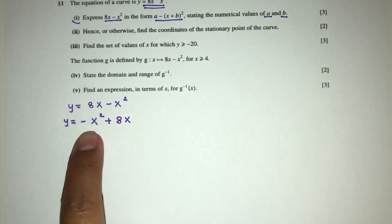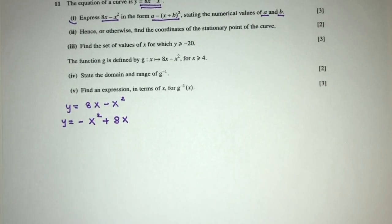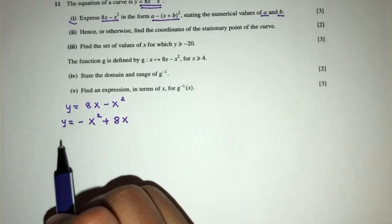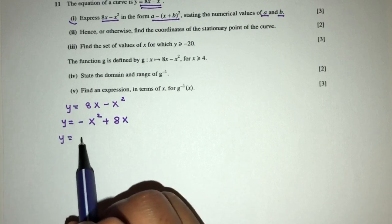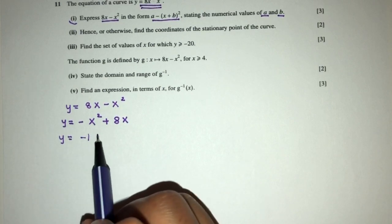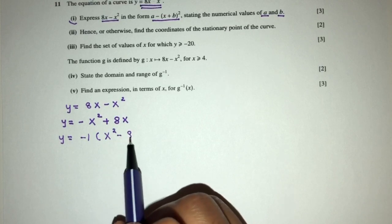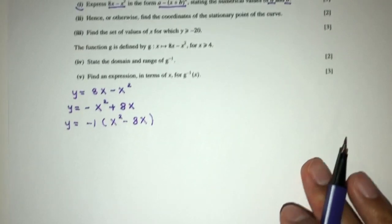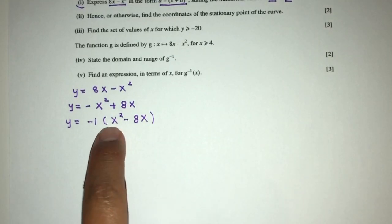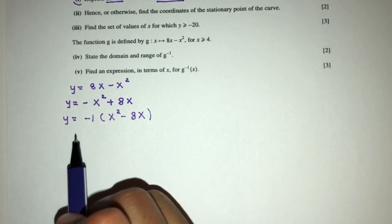We first verify that the coefficient of x squared is 1 — here it is minus 1. So we factorize out minus 1, giving y = -1(x² - 8x). Now we can proceed with the next steps since the coefficient inside is 1.